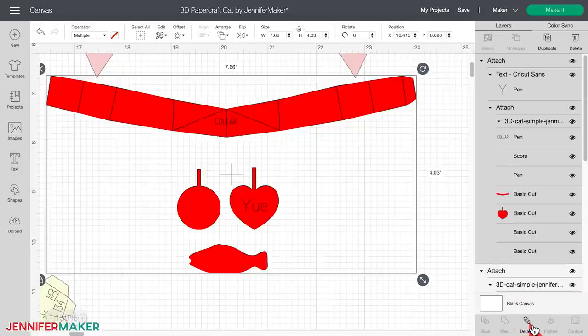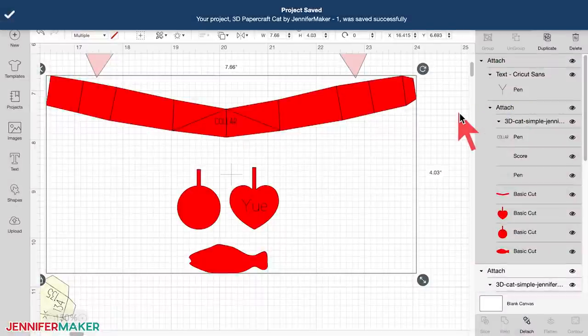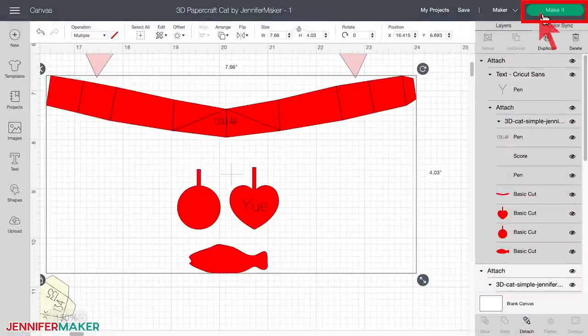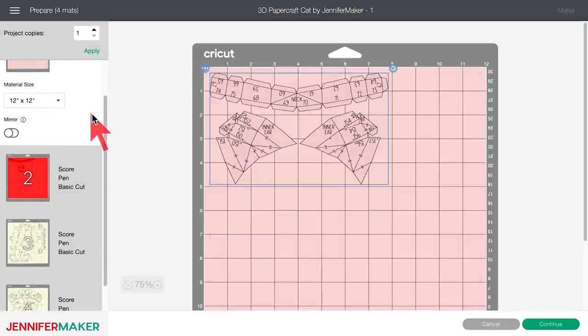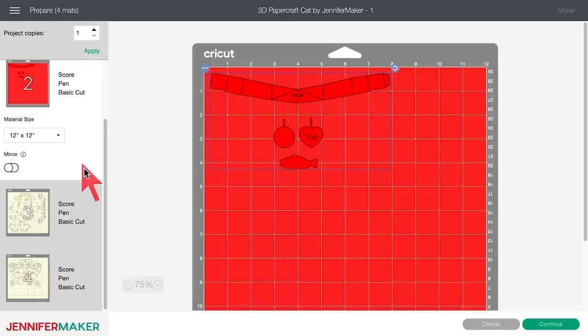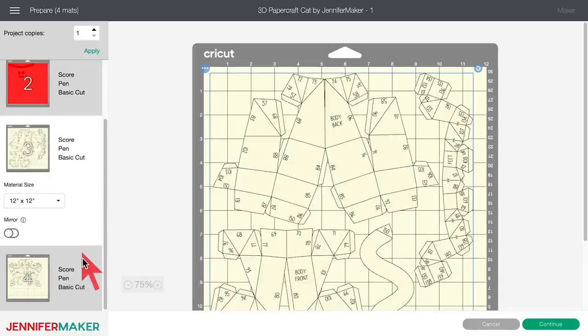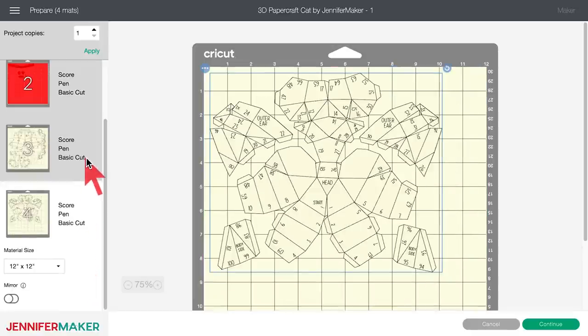When everything looks good, save your work up here with the save option. And then click make it in the top right and check your mats. You should see four mats. One mat for your inner ears and neck. One mat for your collar and tags. And two for your main solid color. Unless of course you change colors.